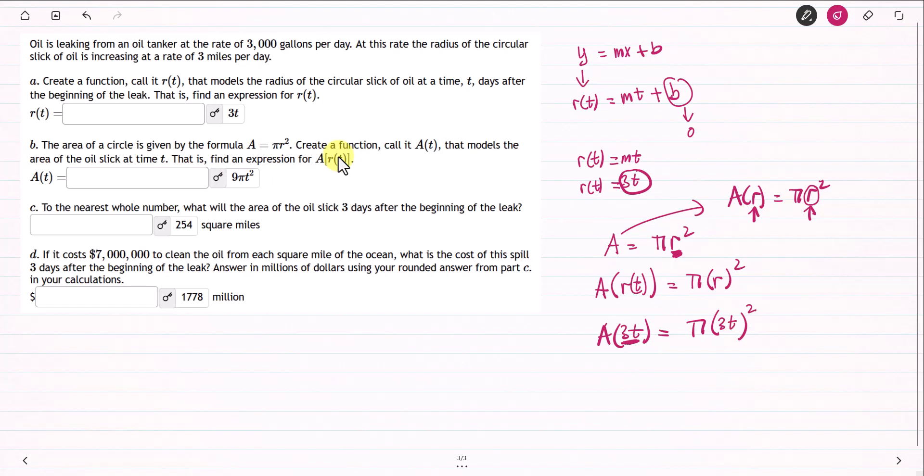This is just a composition of function. A of r of t, where r of t is the inside function. That's why you get 3 squared, 3 squared and t squared, or 9 pi t squared, which is the area written in terms of t, not r.